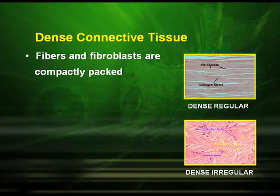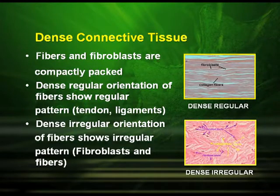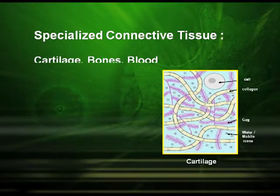In dense connective tissue, the fibers and fibroblasts are compactly packed. Dense regular orientation of fibers shows a regular pattern, seen in tendons and ligaments. Dense irregular orientation shows an irregular pattern. The specialized connective tissue includes cartilage, bones, and blood.